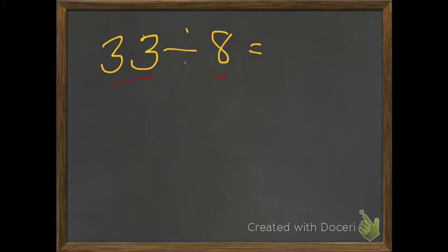If that is hard to think of, just write your facts out. 8 times 2 equals 16. 8 times 3 equals 24. 8 times 4 equals 32. That is pretty close. And 8 times 5 equals 40.